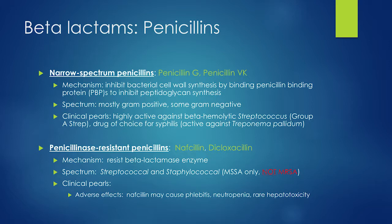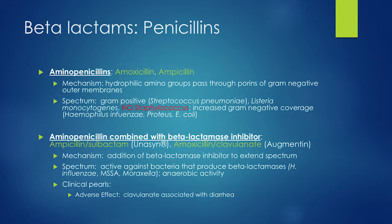Penicillinase-resistant penicillins include nafcillin and dicloxacillin — nafcillin is the modern version of methicillin. After Alexander Fleming invented penicillin in 1927, within a few years we started seeing bacteria resistant to penicillin, producing penicillinases that would break down the drug. So we developed new antibiotics resistant to those penicillinases. Later came our aminopenicillins — amoxicillin and ampicillin — which start to get some gram negative coverage including E. coli and Proteus.